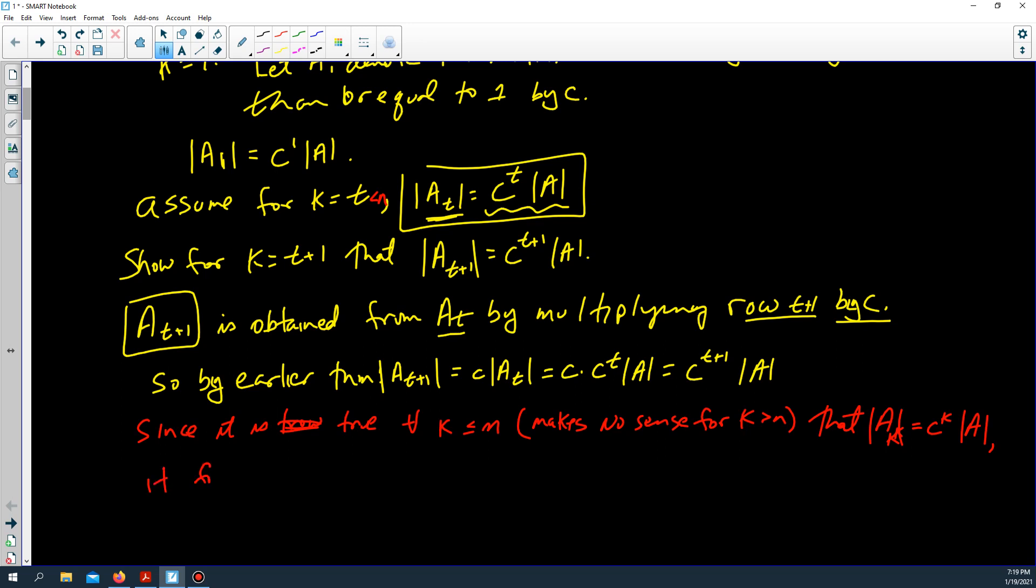It follows that if k is equal to n, the determinant of A_n, which means all rows of A (because there's only n of them), all the first n rows of A are multiplied by c (but there's only n rows). So c times A is equal to A_n. This is c to the n times the determinant of A, and this is all that we wanted to show.